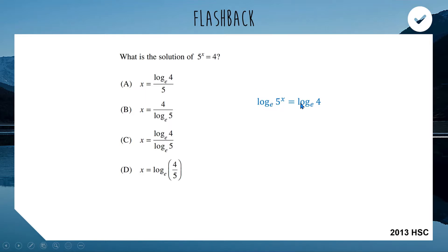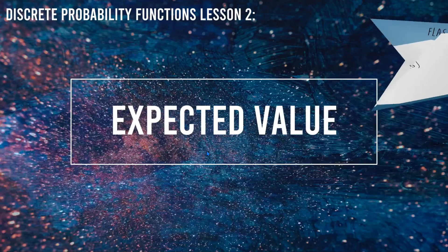First step is take the equation and take log base e of both sides. When we have a logarithm with a term involving a power, that power can be brought down the front to multiply the logarithm. So the left hand side becomes x times log base e of 5. That's called the blogger property. To finish off, divide both sides by log base e of 5, and we get log base e of 4 divided by log base e of 5, which is option C.